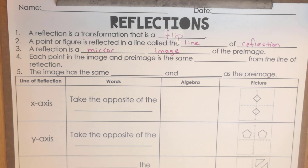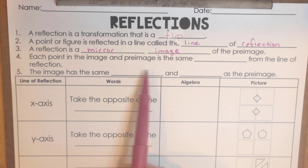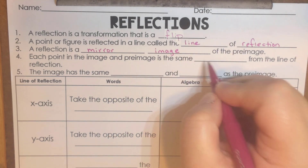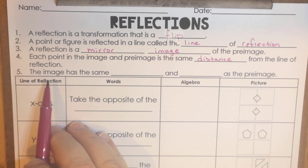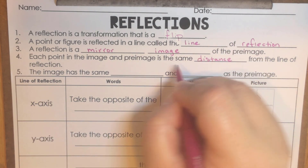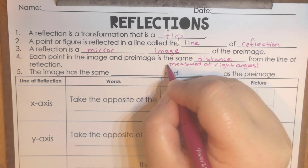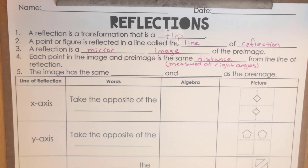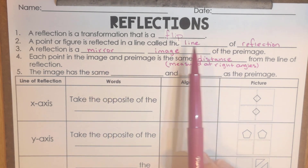If you are doing some kind of video with your phone, you'll notice that the handwriting usually is in reverse — that would be a mirror image. When I'm doing these videos, sometimes I have to remember I'm looking at something that's backwards to me, so it's a mirror image. Each point in the image and pre-image is the same distance from the line of reflection. When we say distance, they're always measured at right angles — from the point to the right angle to the line of reflection.